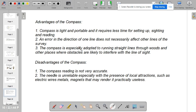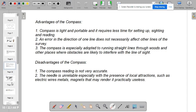And the disadvantages of this compass, the use of the compass is, it's not very accurate. The needle is unreliable, especially with the presence of local attractions, such as electric wires, metals, magnets, that may render it practically useless.